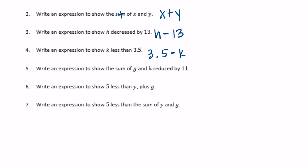Number 5: write an expression to show the sum of g and h reduced by 11. So we have g plus h, and then we reduce it — subtract 11. We don't need any parentheses there because we would do g plus h first anyway.